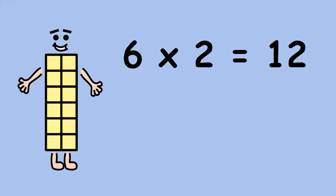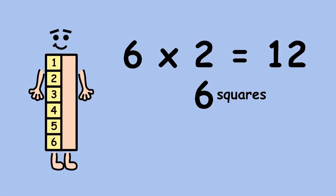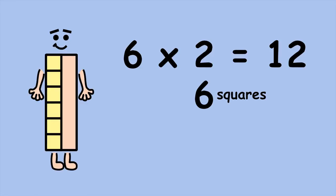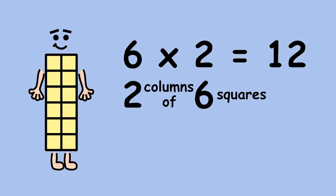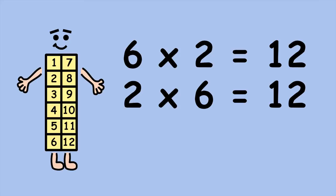If you don't like counting rows, you can count columns instead. There are six squares in a column. How many columns are there? 2. So 2 groups of 6, or 2 times 6 equals 12. Either way, you get the same answer.